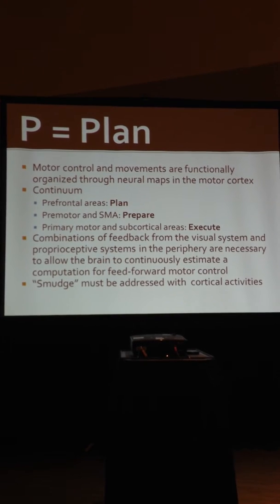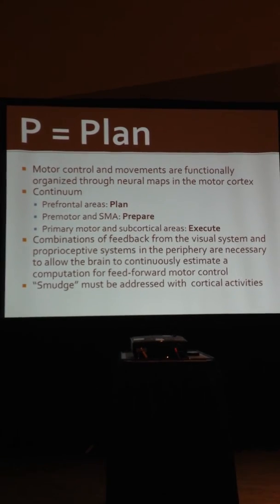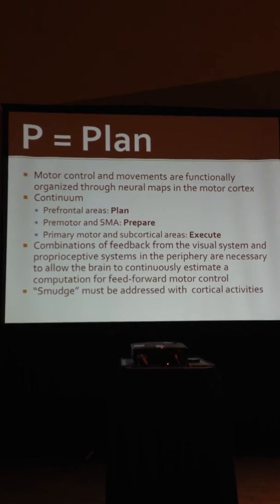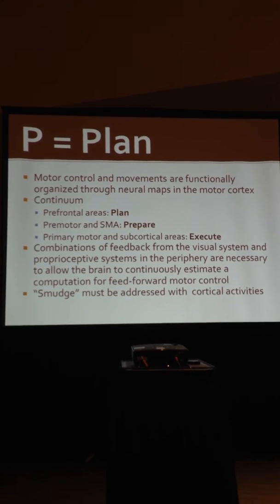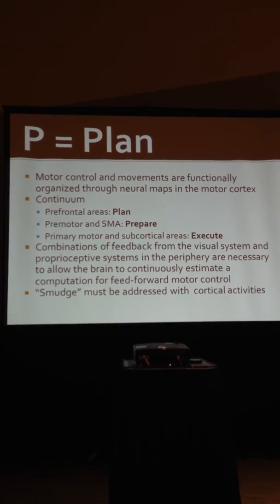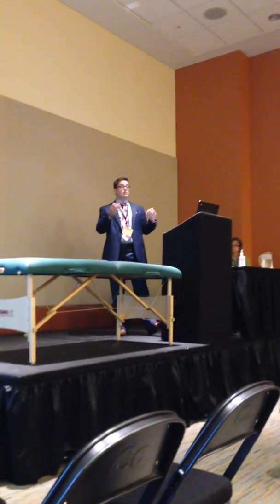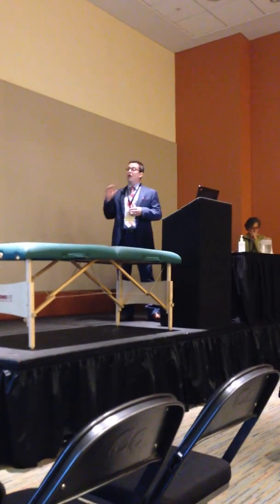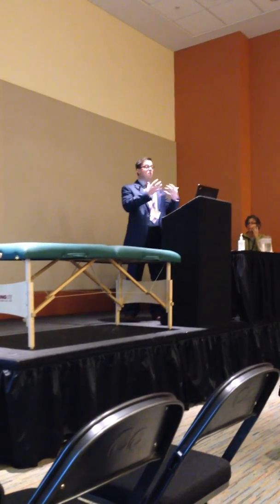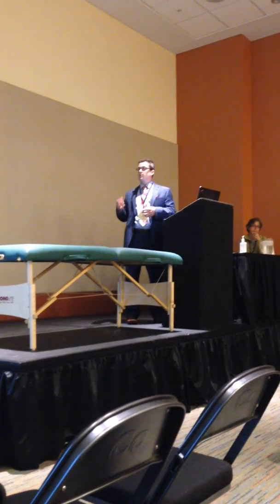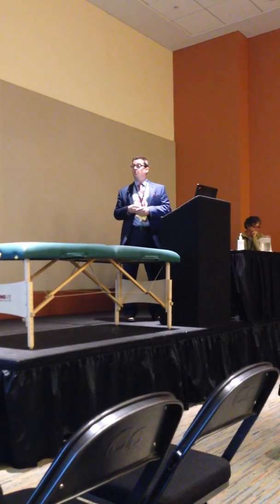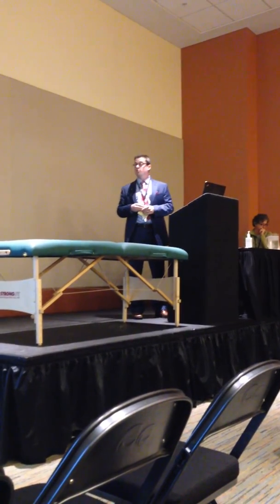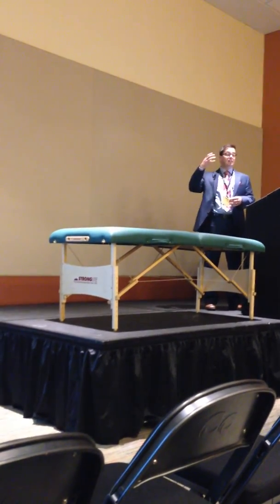And then we get to P — plan. Plan is probably the most confusing and understudied portion of our algorithm, because we're just learning the influence of the brain on pain and on motor control. Motor control always begins in the brain: the prefrontal areas are planning for movement, the premotor areas and supplementary motor areas are preparing for movement, and the primary motor areas are executing movement. There's a combination of visual inputs, auditory inputs, and this cortical planning occurring prior to the person actually contracting or moving a muscle. If there's a cortical smudge, you've got to address that — we don't just have somebody contract something that their brain isn't ready to contract.